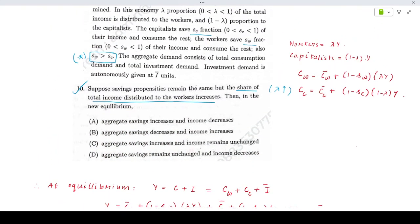That means the aggregate savings will remain unchanged. Income will fall and aggregate savings will remain unchanged. So here also your correct option turns out to be option number D. Thank you.